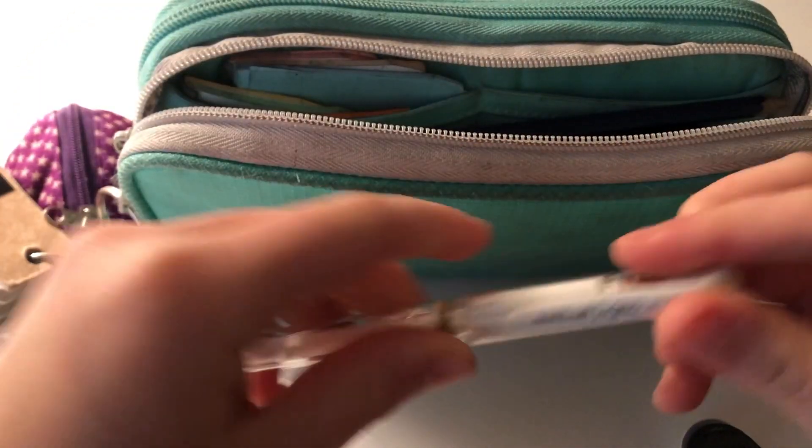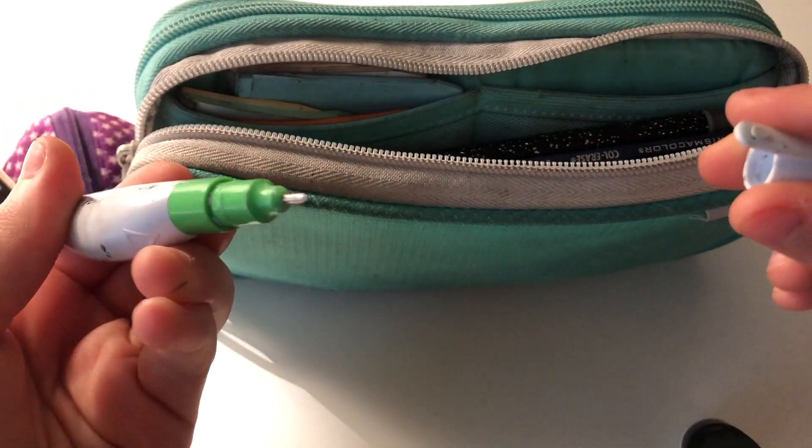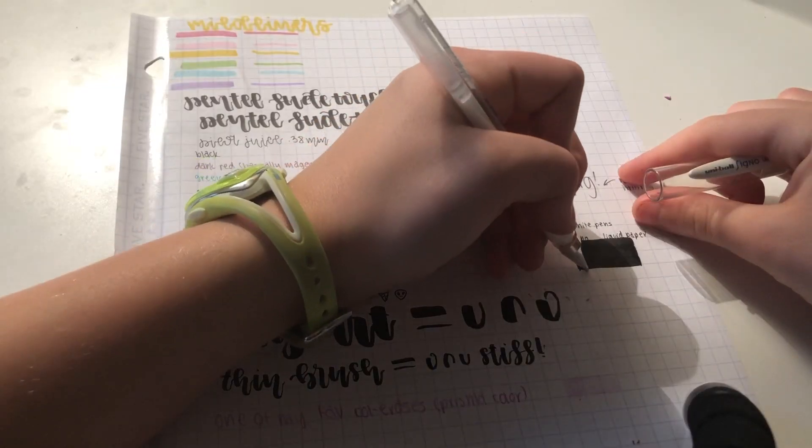These are my white pens. I use the Uniball Signo for precise areas and I use a liquid paper correction pen for more coverage - both more intense and a wider area.